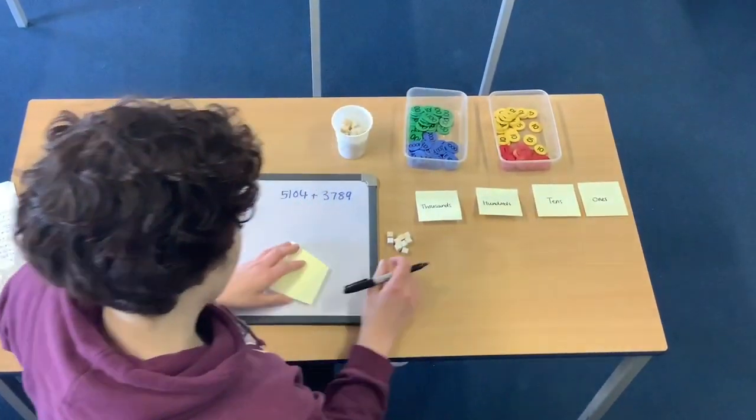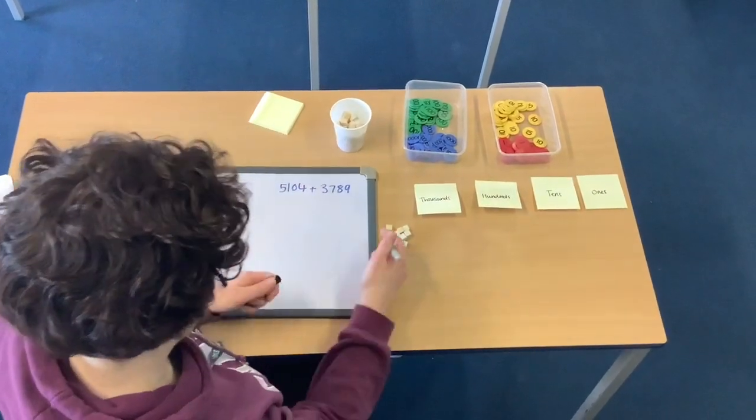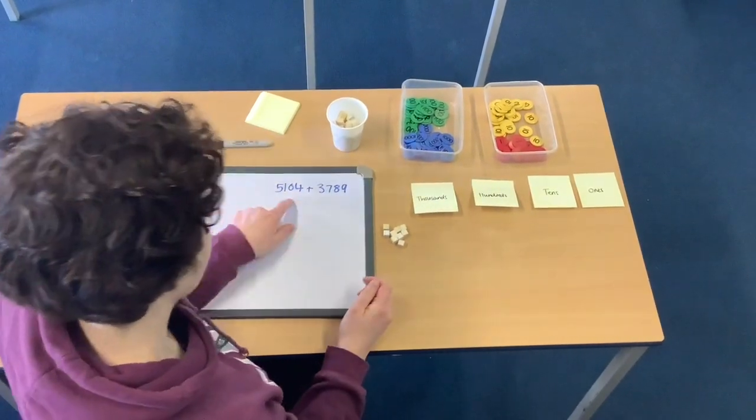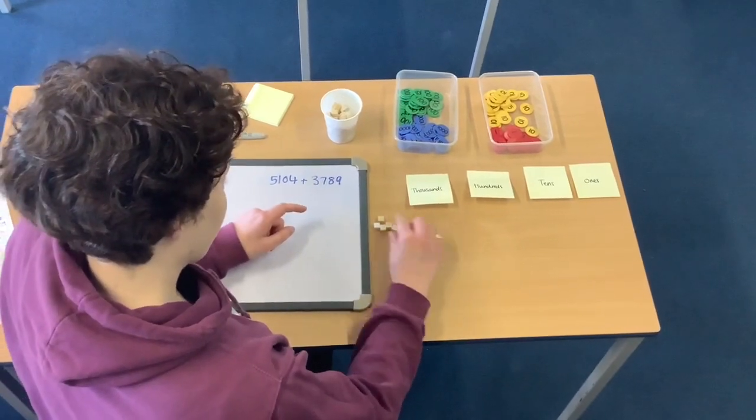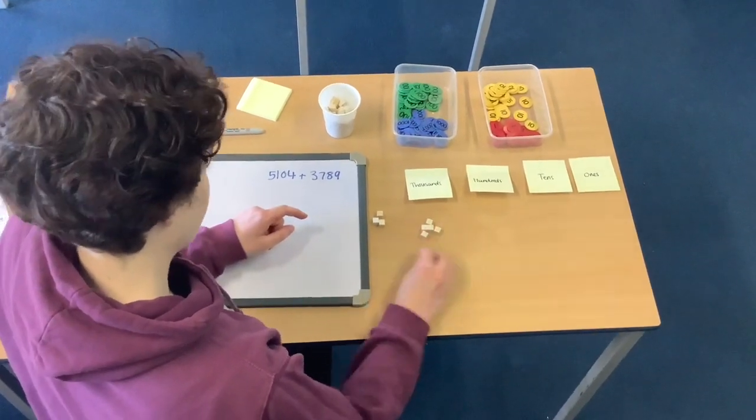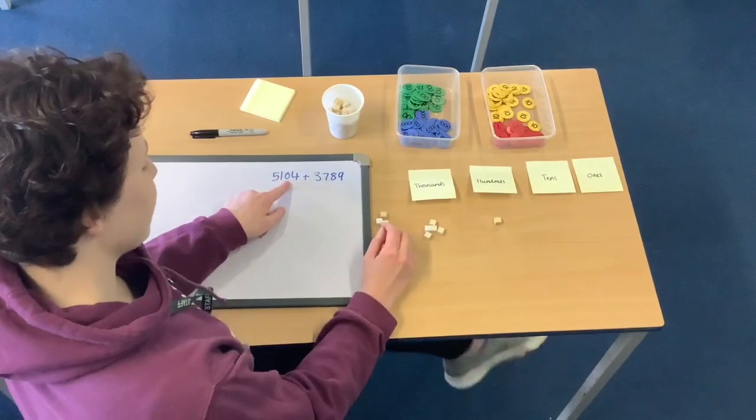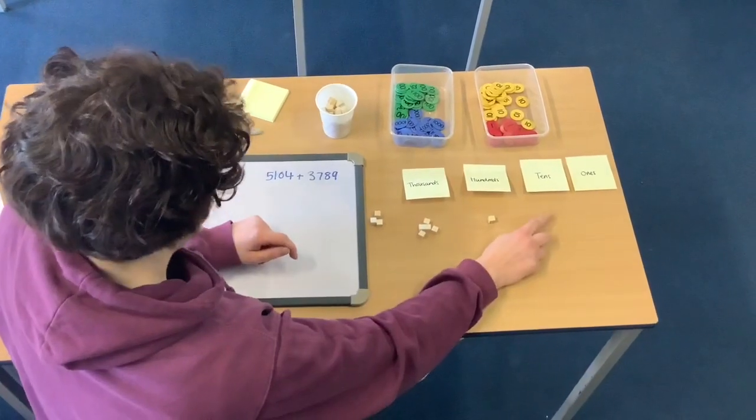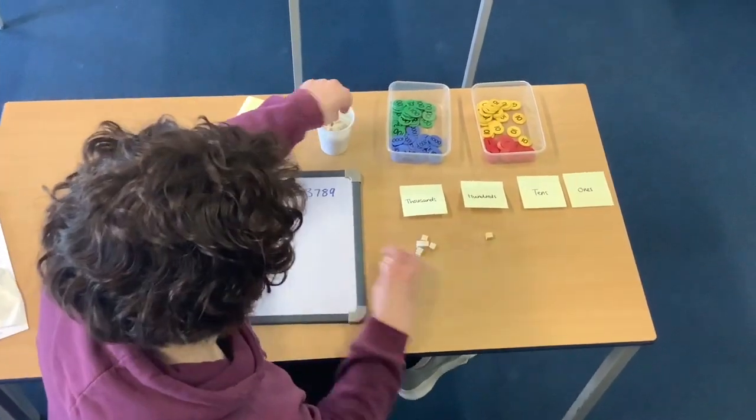So instead of making my number with post-it notes this time we are going to make them with these small bricks. So my first number I've got 5 thousands and I've got 1 hundred. I've got zero tens so I'm going to leave my tens column blank and then I have got four ones.